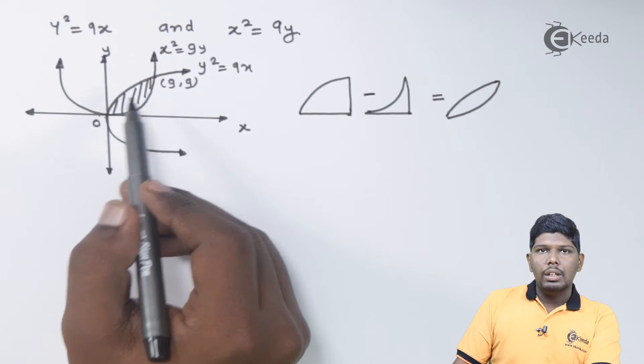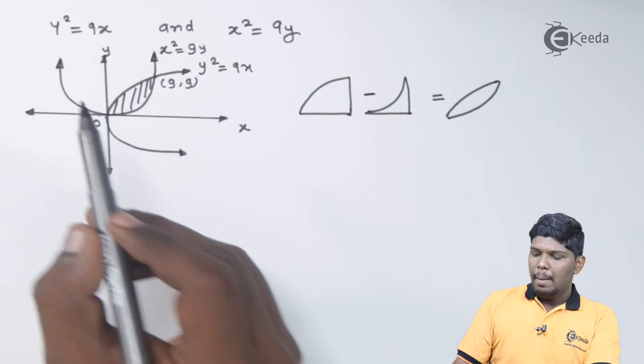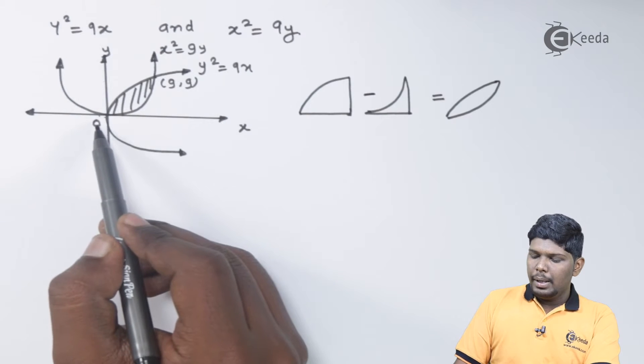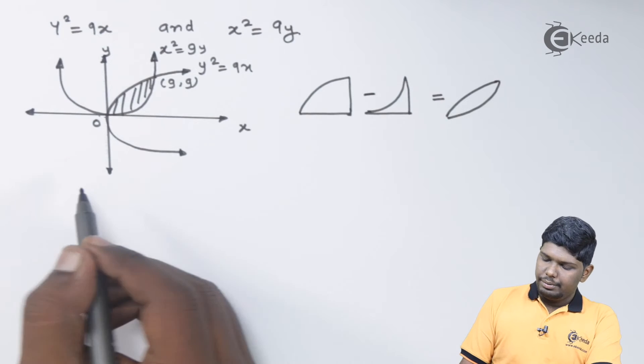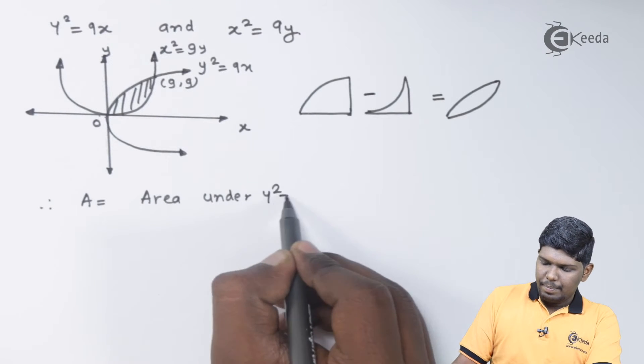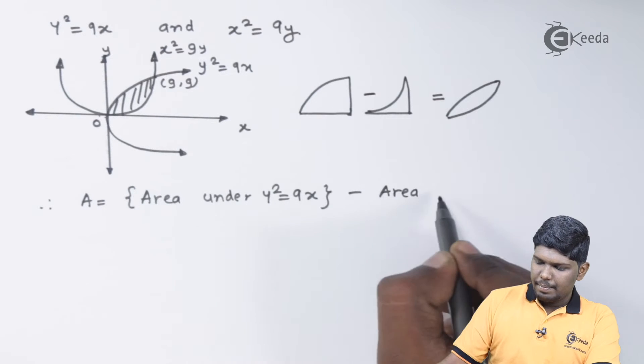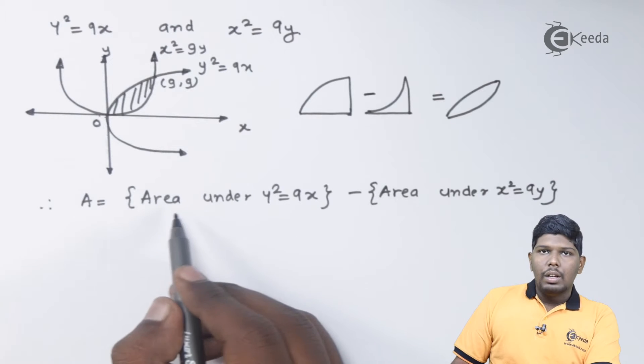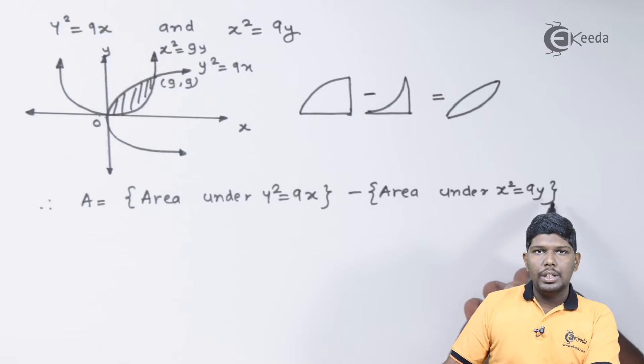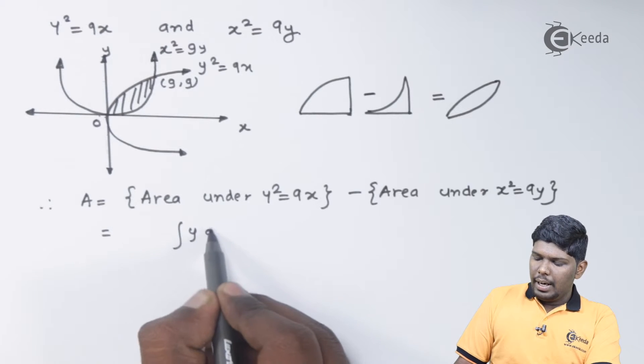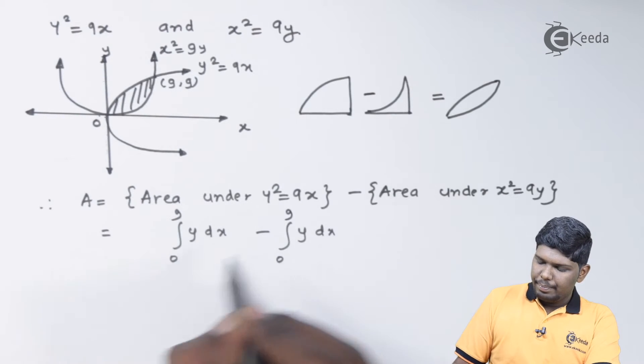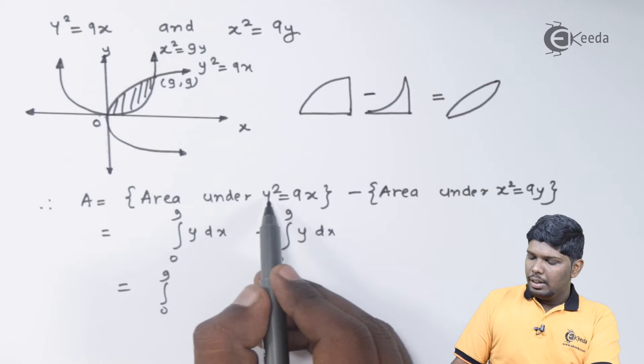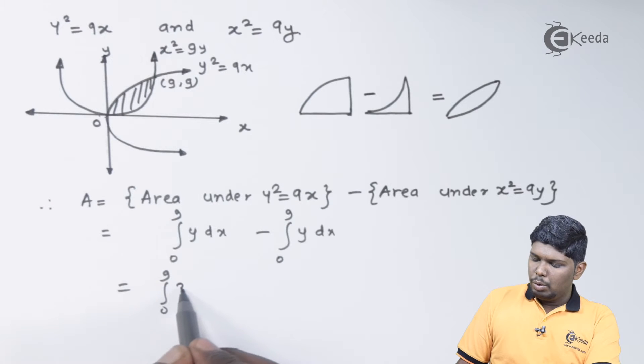So to find the required area, the formula will be area under the parabola y square is equal to 9x minus area under the parabola x square is equal to 9y from the limits 0 to 9. The limits that we are going to use is of x, therefore the formula will be y dx. So this will be area under y square equals 9x minus area under x square equals 9y. Both will have integral y dx and both will have limits 0 to 9.